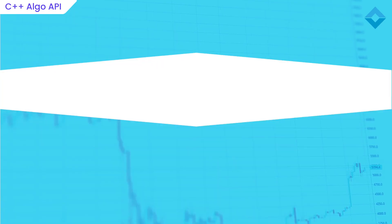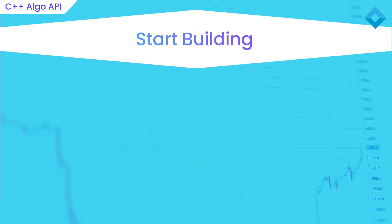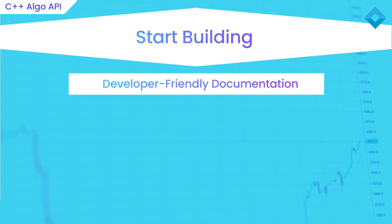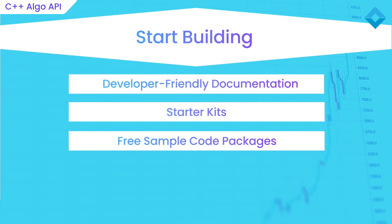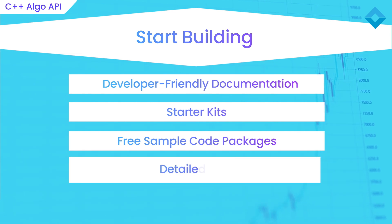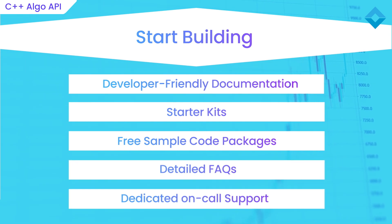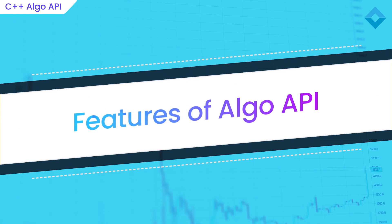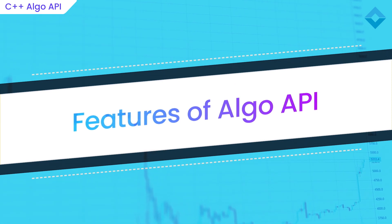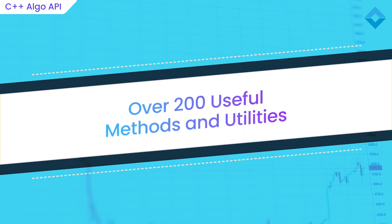It's easy to start building your first algo with our APIs, using our developer-friendly documentation, starter kits with free sample code packages, detailed FAQs and dedicated on-call support. Let's take a closer look at the features of this algo API, which comes packed with over 200 useful methods and utilities to start with.